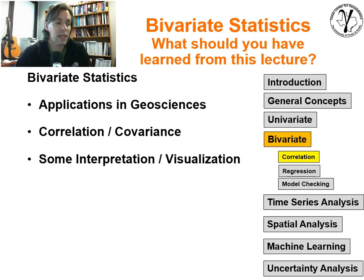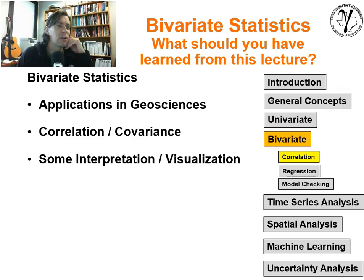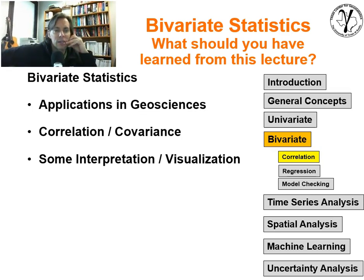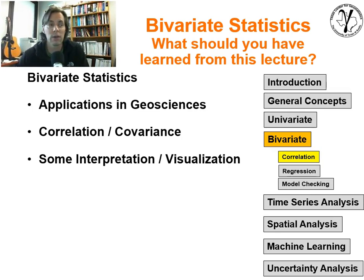With that, I'll finish the discussion on bivariate statistics. Next I'll talk about Bootstrap with a short discussion, and then we'll get into bias and spatial analysis. As usual, if you have any questions I'm happy to help. All examples will be posted on GitHub. I hope this has been helpful.